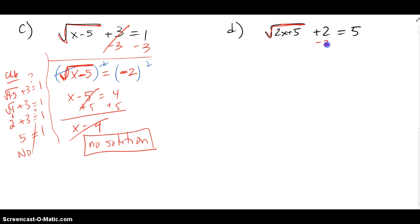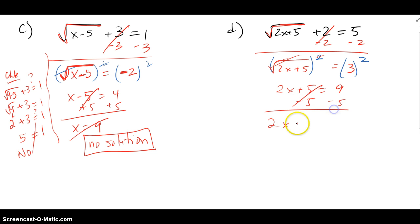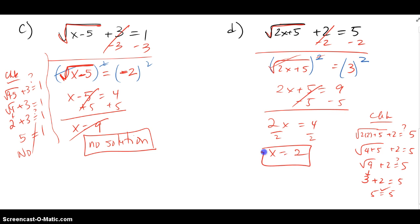Part d: subtract 2 from both sides to isolate the radical, giving square root of 2x plus 5 equals 3. Squaring both sides eliminates the radical: 2x plus 5 equals 9. Subtracting 5 and dividing by 2 gives x equals 2. Checking: square root of 2 times 2 plus 5 plus 2 equals square root of 9 plus 2 equals 3 plus 2 equals 5. Confirmed.